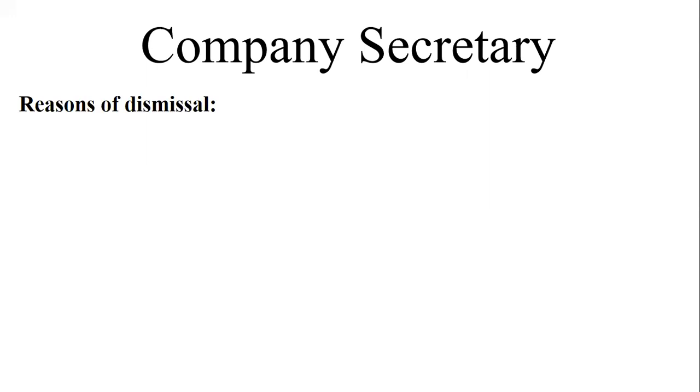So in this video, we have a dismissal procedure, and we have a dismissal of company secretary. These are the reasons of dismissal. The first reason is breaking the rule of the agreement. The agreement relates to the appointment of the company secretary.